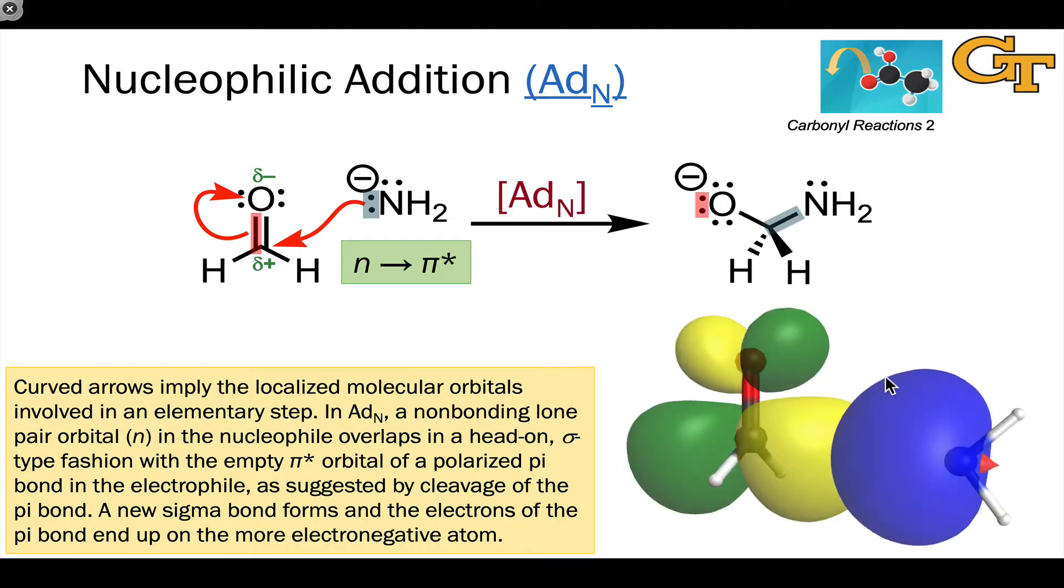Here's an image of the orbital overlap, where we can see the large non-bonding lone pair on NH2 minus, and the large lobe on the pi star orbital of the carbonyl compound. Overlap between those gives rise to the new sigma bond between the nucleophile and carbonyl carbon. So sigma-type overlap of these two lobes is involved here, and this image makes that very clear.